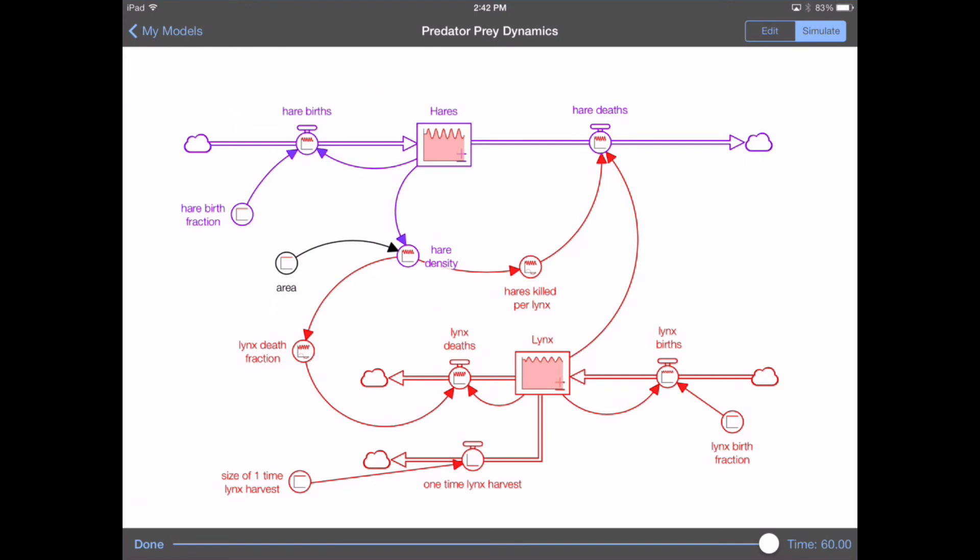And then using the slider at the bottom of the screen, I can slide my finger along, and what it will do is print out values for each one of the elements on the screen at the point in time at which the slider is at.